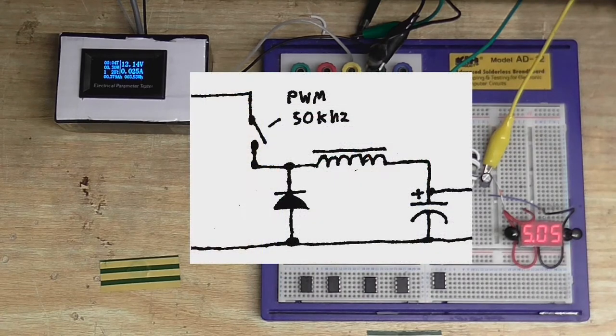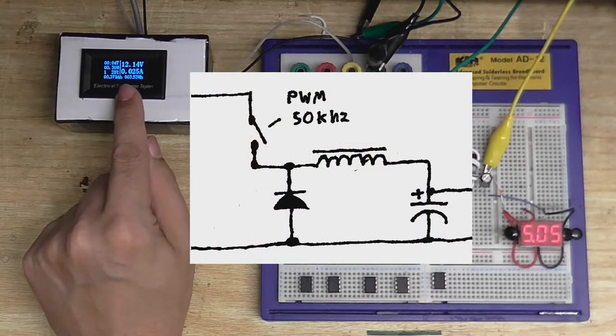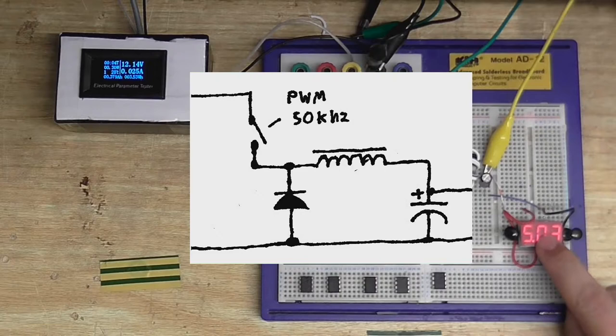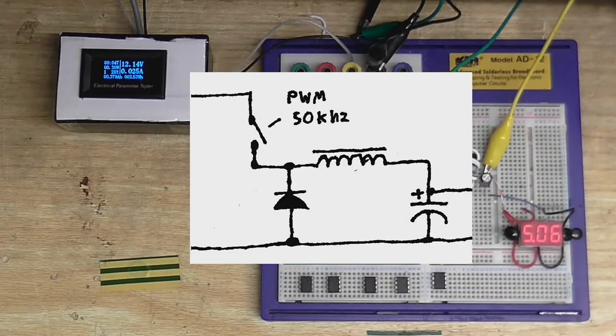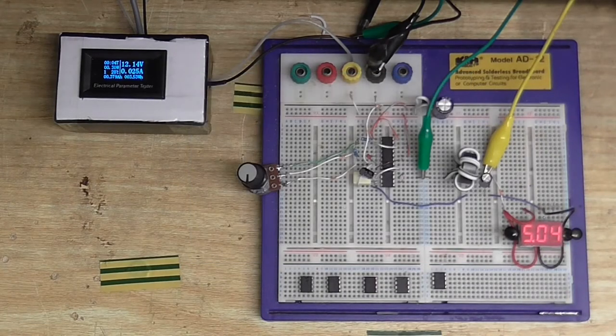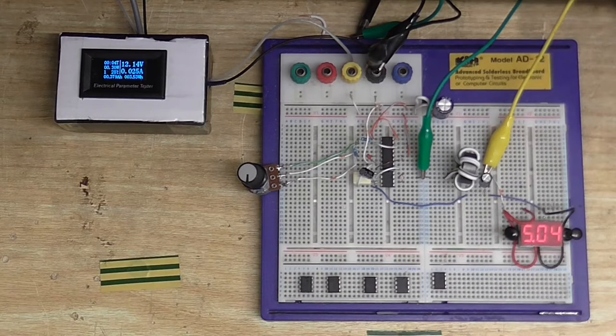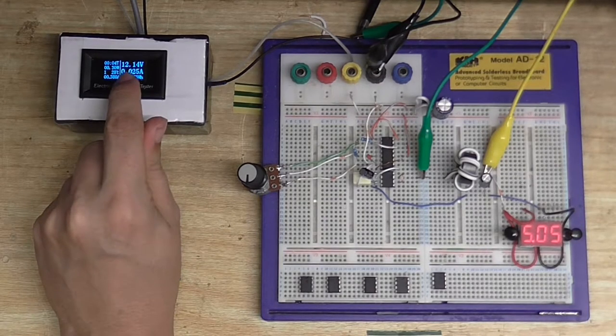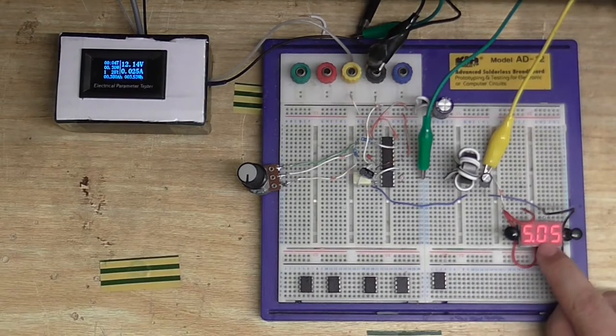So I guess you're wondering just what the hell a buck converter is. Well, it's a circuit that takes a higher voltage and steps it down to a lower voltage using switch mode topology. So I've got a little basic buck converter circuit that I made here, and it's taking 12 volts and stepping it down to 5 volts.